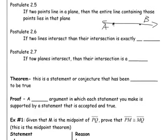However, if two lines intersect, so if I had a line and a line intersect, their intersection is exactly one point. Okay? When two lines intersect, their intersection is a point. And if two planes intersect, then their intersection is a line.